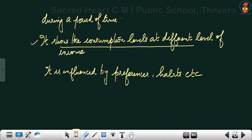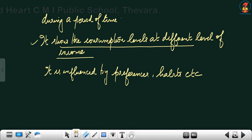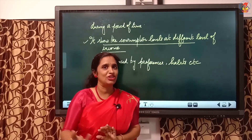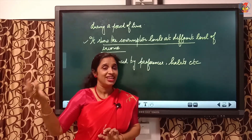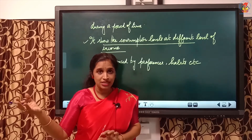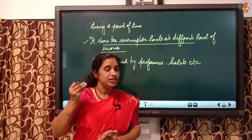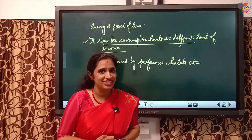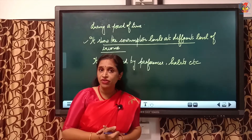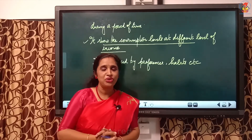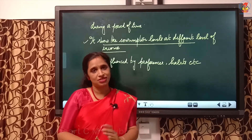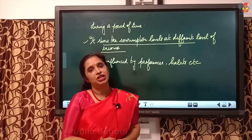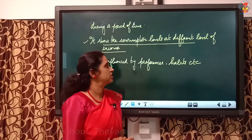In the table of aggregate demand and aggregate supply, at zero level of income consumption is 40, at 100 level of income consumption is 120, at 200 level of income consumption is 200, and when income increased to 300 consumption increased to 280. In the first two situations C is greater than Y, then C is equal to Y, then C less than Y — showing consumption at different levels of income.